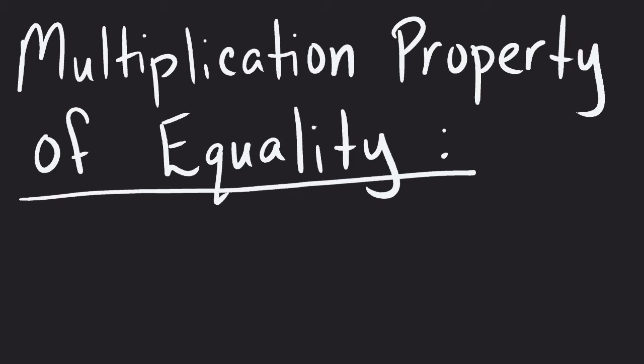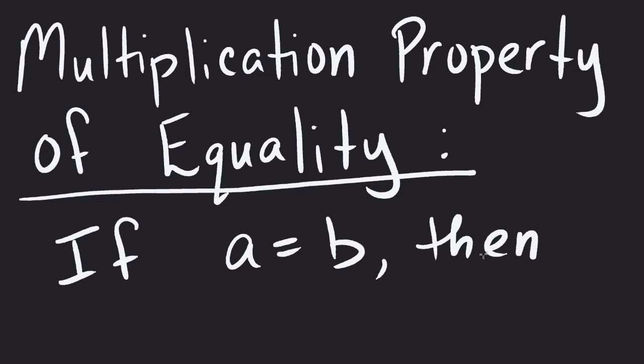Multiplication property of equality. So the multiplication property says that if I'm given a equal to b, then I could take any value c, and I can multiply both sides by it, and the expression will still stay true, or the equality will still stay true.